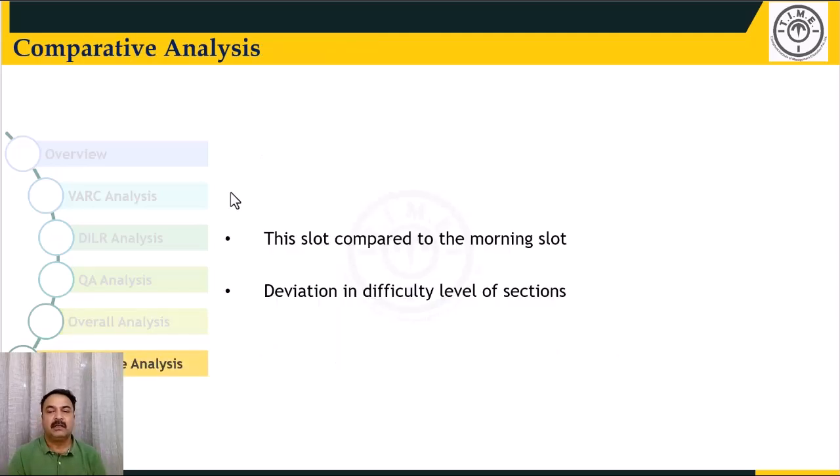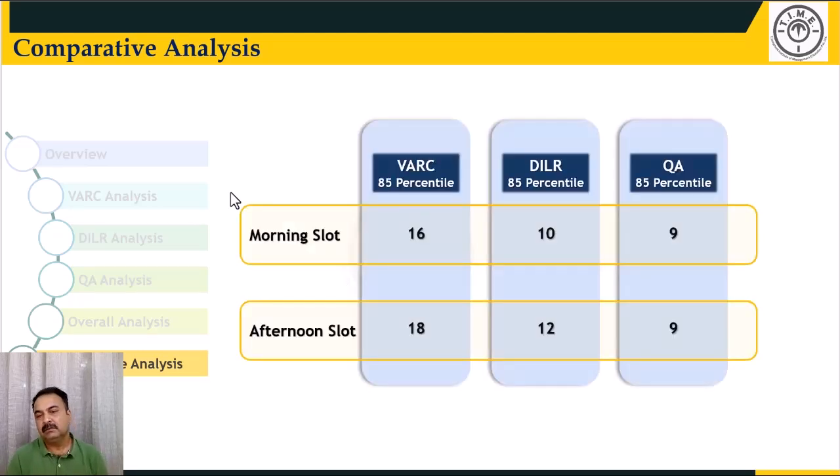Now this slot compared to the morning slot and deviation in the difficulty level of sections. If you look at what we are understanding by looking at analysis of the first slot and the afternoon slot that I am speaking about, it clearly shows that the morning slot was one shade even more difficult than this particular afternoon slot.